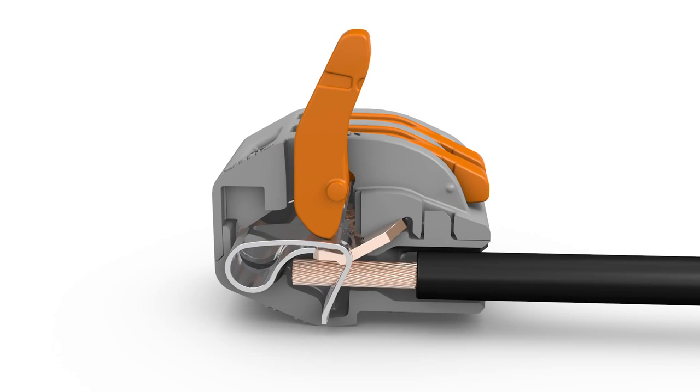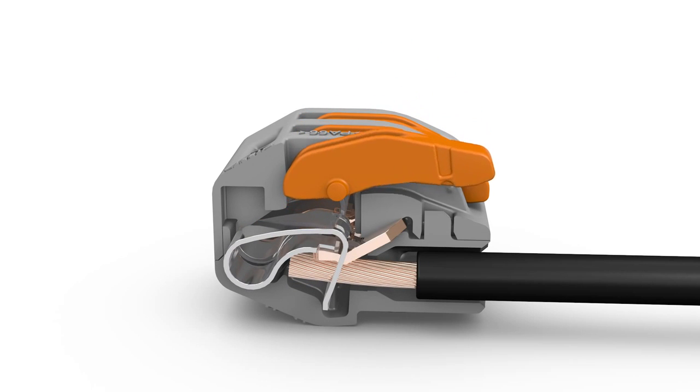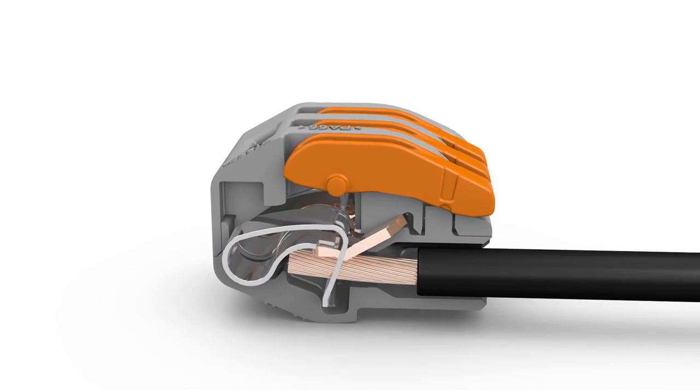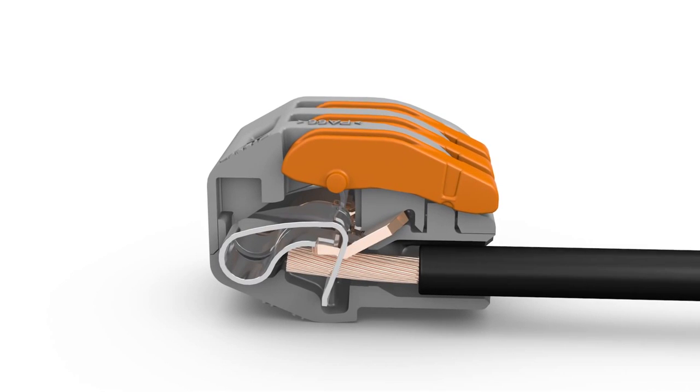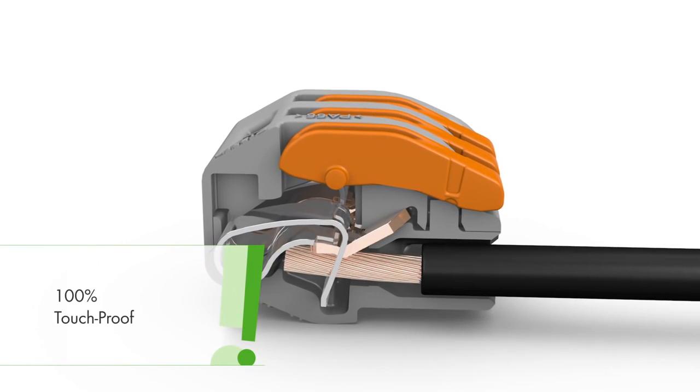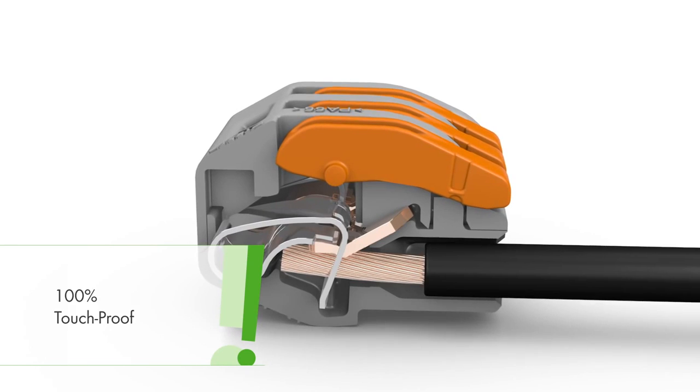Insert the conductor, then lower the lever to close the clamp. If properly terminated, the connector fully encloses the conductor insulation, preventing accidental contact with live parts.